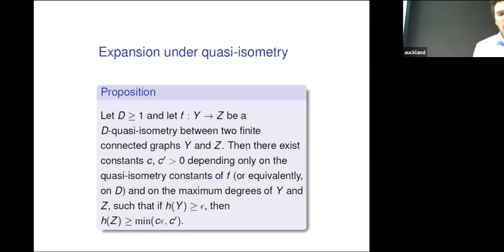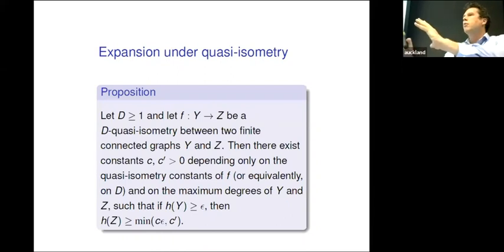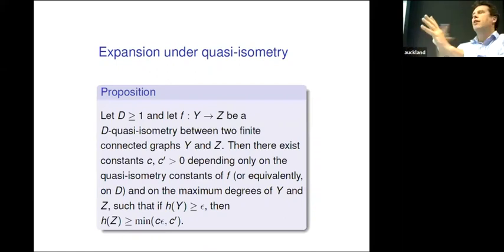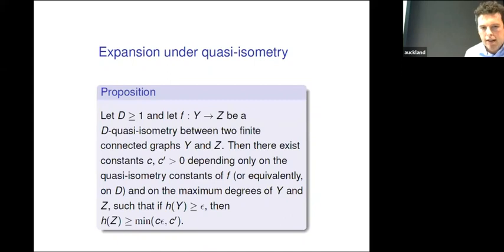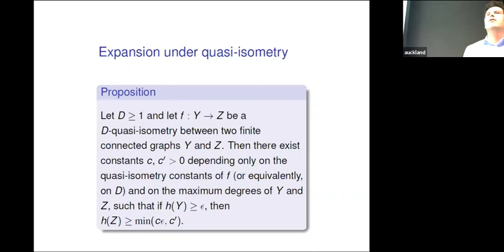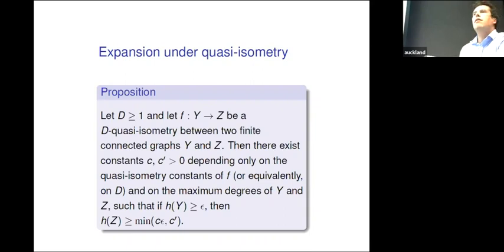What happens with expansion under quasi-isometry? Our strategy is to go from the polytope to the Cayley graph, get expansion for the Cayley graphs, and then conclude we have expansion on the polytope side. This proposition allows us to do this: if you have two finite connected graphs Y and Z and a quasi-isometry between them, and one of them has expanding parameter at least epsilon, then the other one is at least min(C(epsilon), C'), where these constants only depend on the quasi-isometry constants of F — not on the particular graphs.